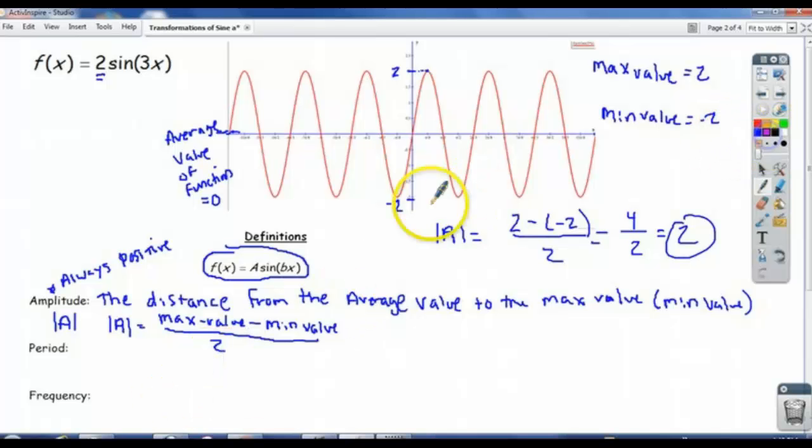Now, period - we've already talked about this, so we could have figured out the period from this function right away even if we didn't have the picture. If you look at the picture, the length of one cycle is right here, so the period is 2π over 3. We have a formal definition of period, but I'm going to write: length of one cycle.